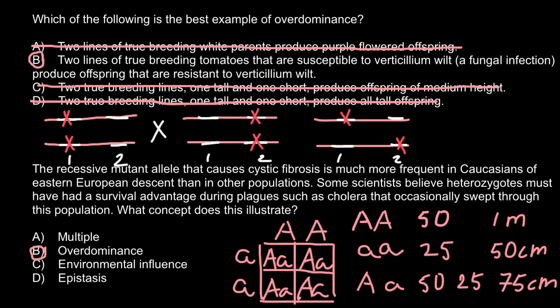Answer D, epistasis, would be an example when one gene affects another. For instance, imagine one trait is hair color — a female has an allele for red hair and a male has an allele for baldness. The male progeny would not be able to express red hair color because he is going to be bald. So one gene is epistatic to another, and we call this epistasis. Red color in this example would be hypostatic.